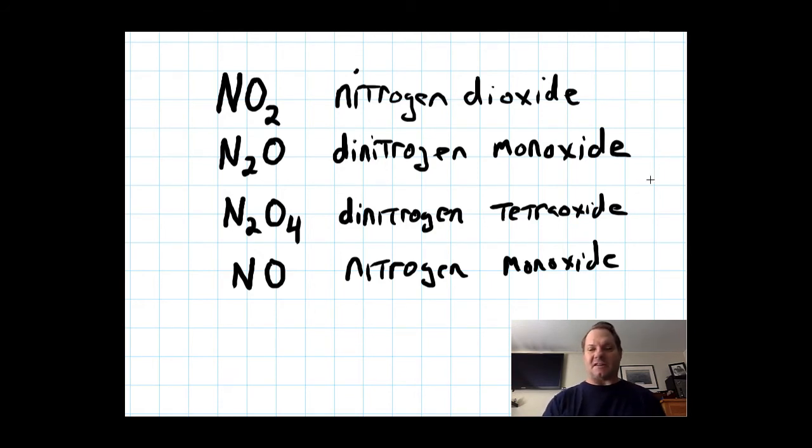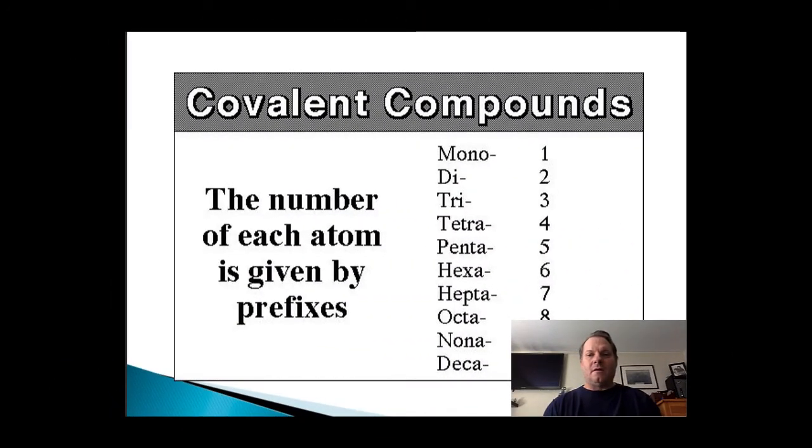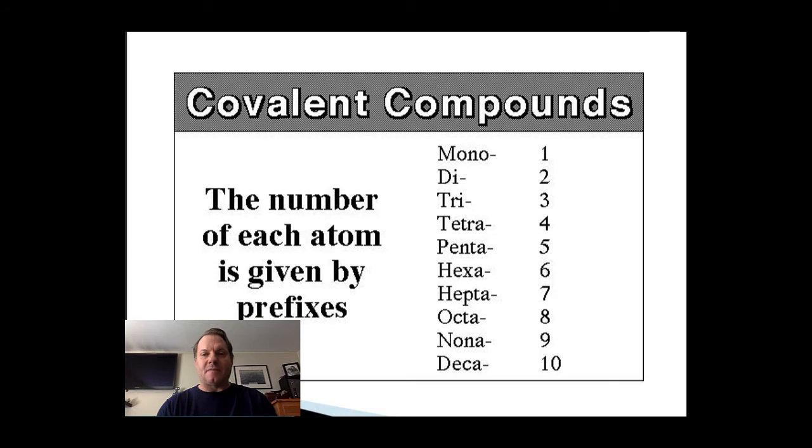So let's take a look at these prefixes. We have the prefix mono if we're talking about one unit. And again, we only use that for the second element in the compound. Di means two, tri means three, tetra is four, penta is five, hexa is six, hepta is seven, octa eight, nona nine, and deca is ten.